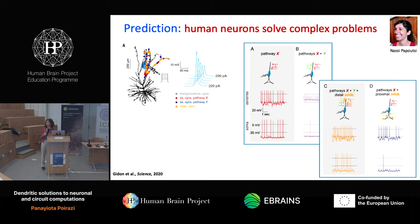If you activate just one pathway, you get a strong response in the dendrite and a strong response in the soma because the dendritic depolarization is sitting within the optimal range. But if you activate both together, because the net depolarization is much higher, the response in the dendrite is very small and the somatic response is much smaller. These simulations suggest that by having these types of dendritic spikes, you can solve the exclusive OR problem.